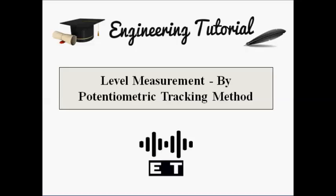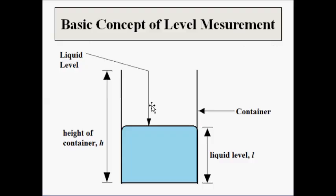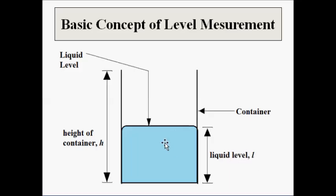The basic concept in level measurement involves a container or tank which will be filled with a liquid, say water, up to a certain level L. The total height of the container is h. We have to determine this liquid level L with the help of the potentiometer or resistive transducer. In this case we are using a linear potentiometer, not a rotary potentiometer, as it is a straight motion.